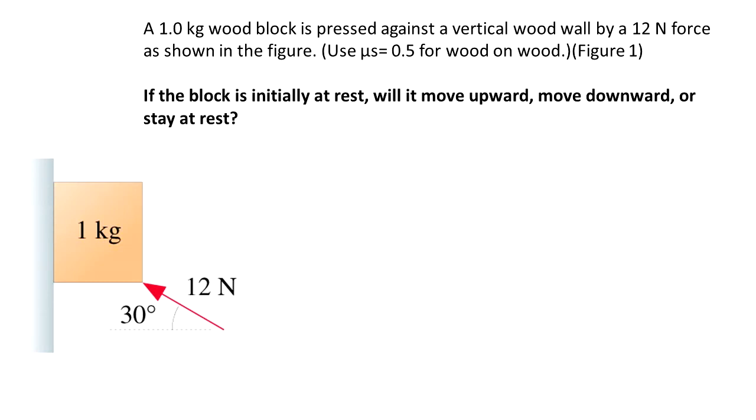We have a 1 kg wood block that is pressed against a vertical wood wall by a 12 N force as shown in the figure. The coefficient of static friction is 0.5 for wood on wood.